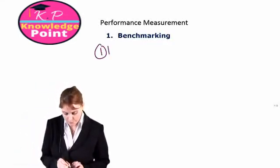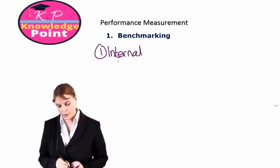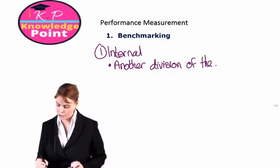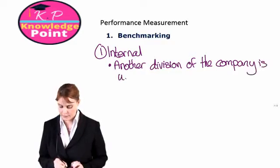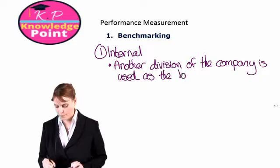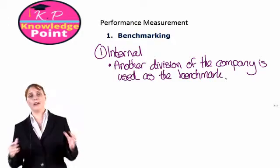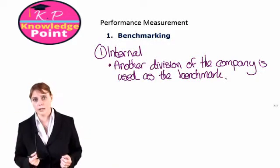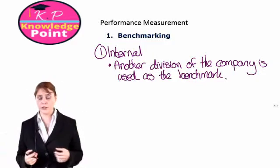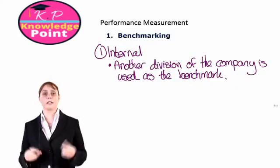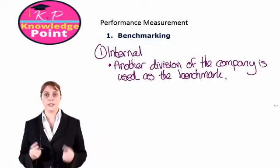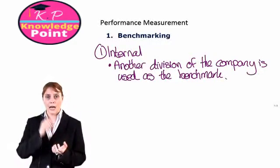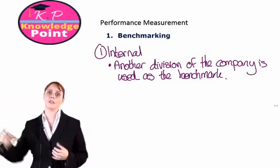The first is internal benchmarking. This is where another division of the company is used as the benchmark. For example, suppose we are an organization that produces and sells both books and DVDs. We could measure the performance of the book division by comparing them to our DVD department — looking at the return on capital employed for each division, their residual income, and the number of customer complaints. So we are asking: has the book department's performance measured up to the standards set by the DVD department?